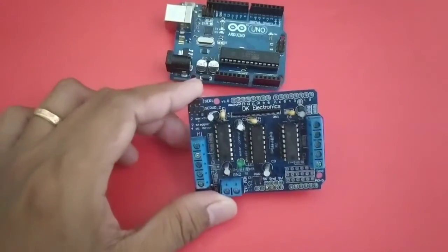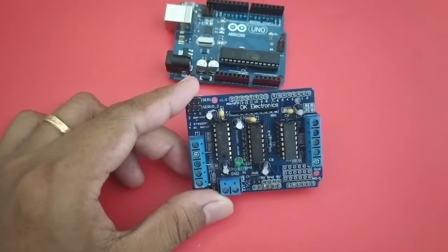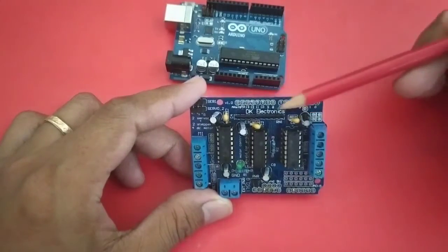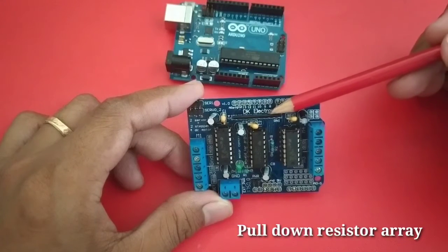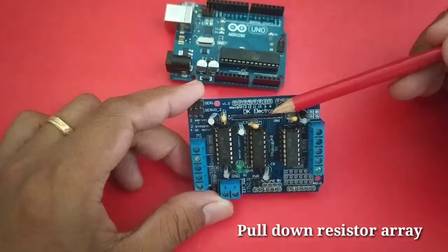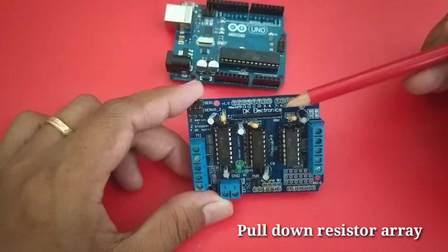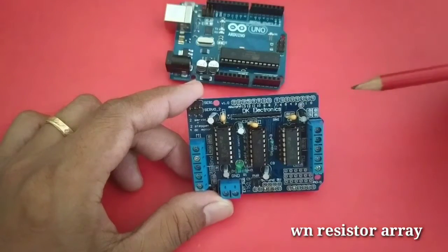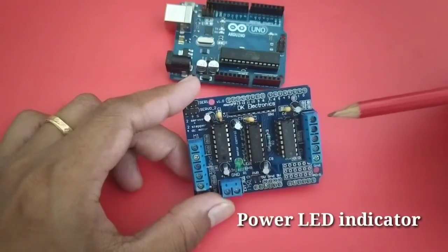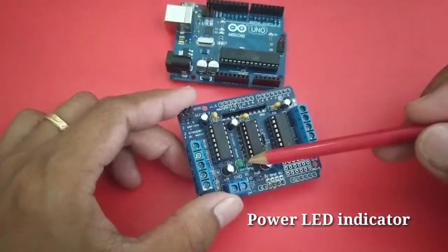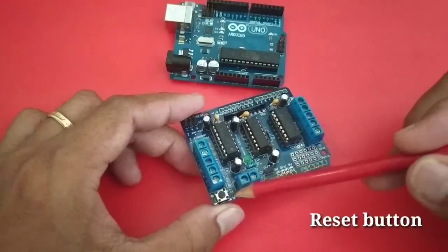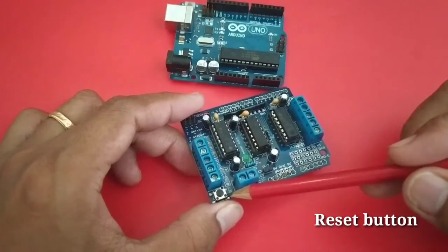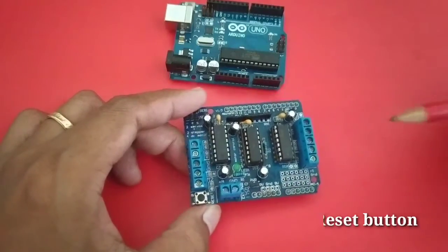The L293D motor driver shield also comes with the pull-down resistor array, which is this one. This is to keep the motors switched off during power-up. It also comes with the power LED indicator, this LED, and a reset switch, which is basically an extension of the Arduino reset button.